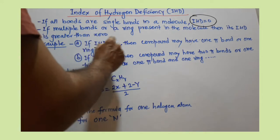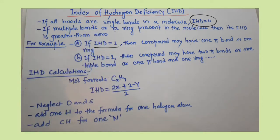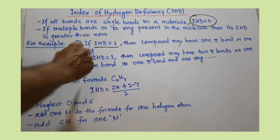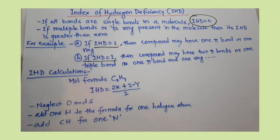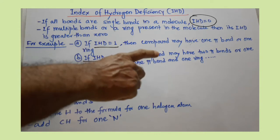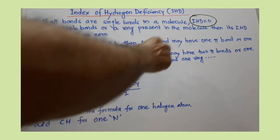For example, if IHD is one, there might be one pi bond or one ring present in the molecule. For IHD two, there will be two pi bonds or one triple bond or one pi bond and one ring.